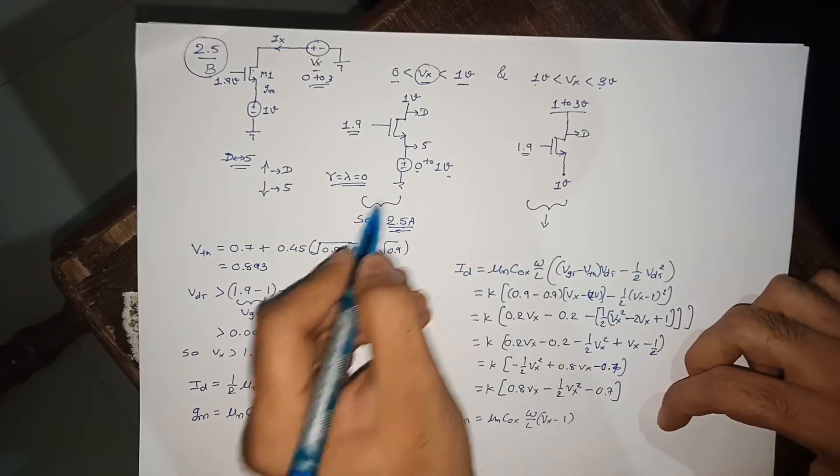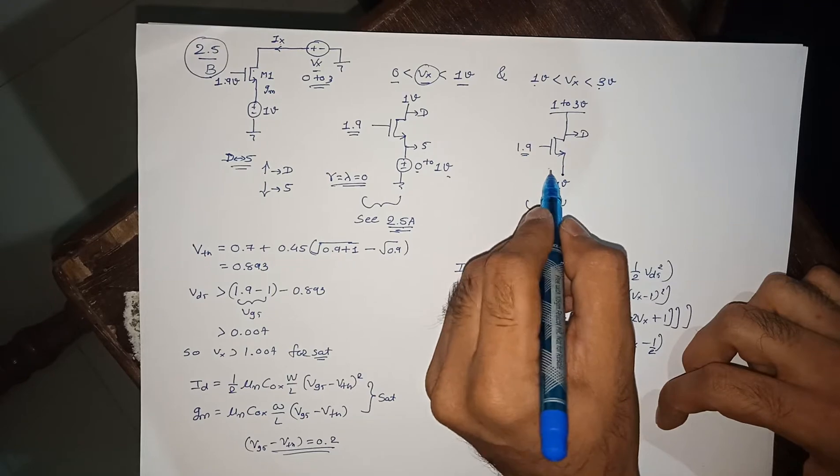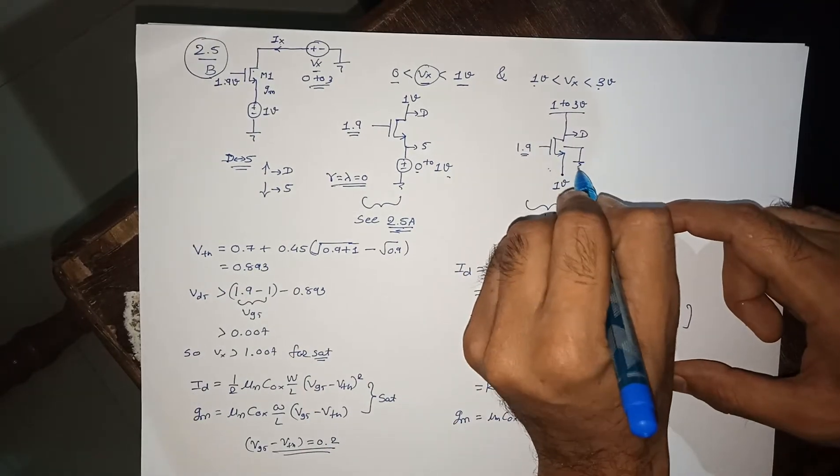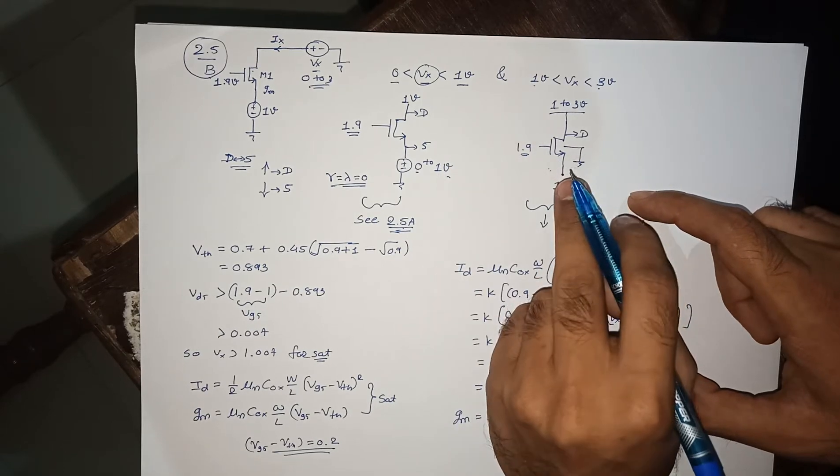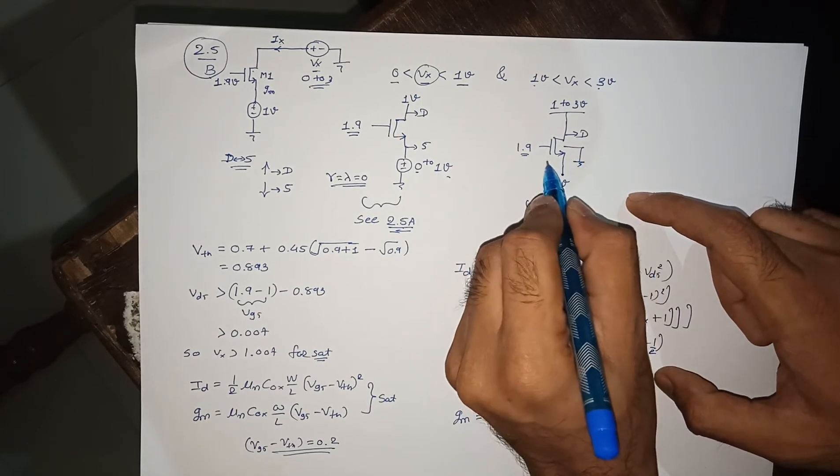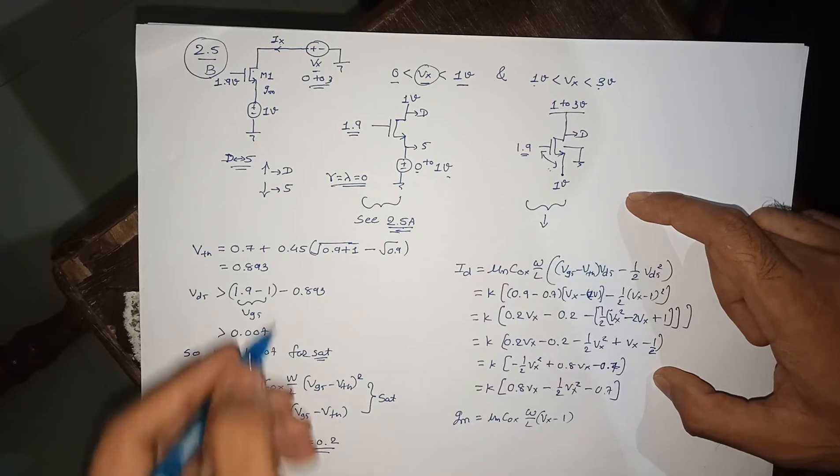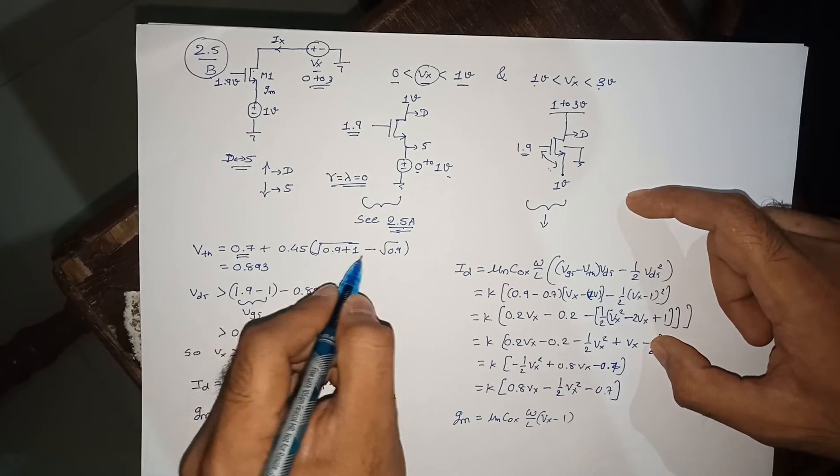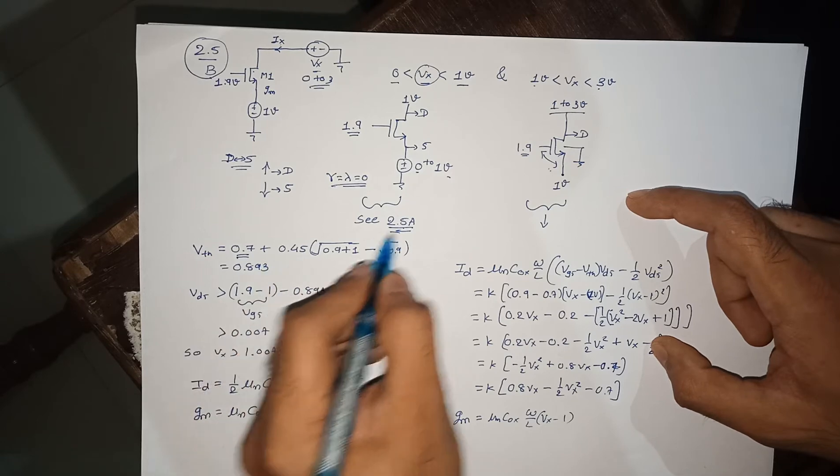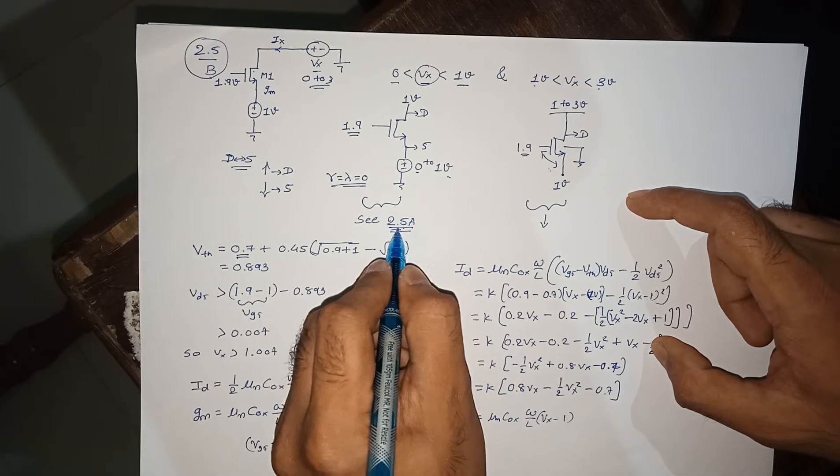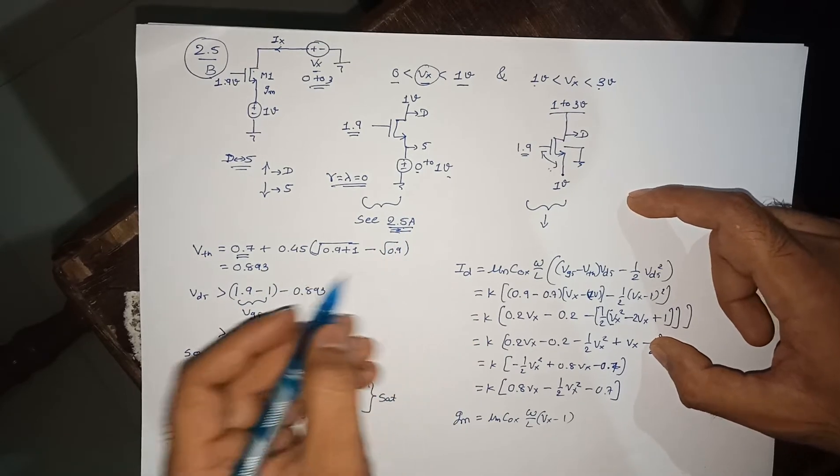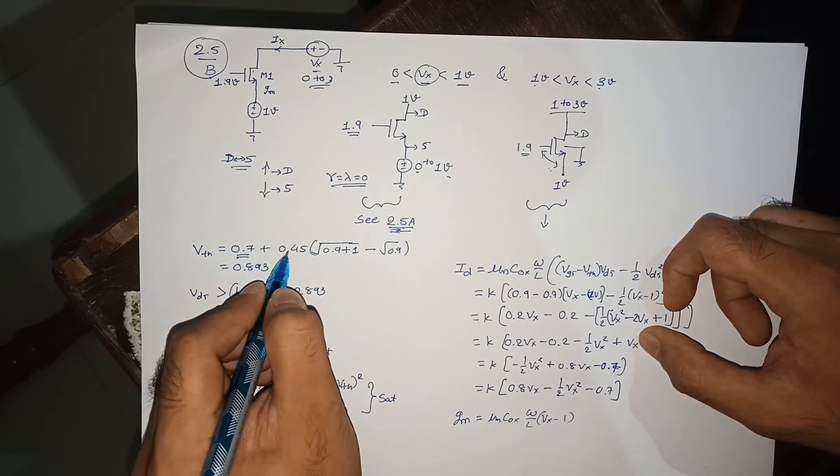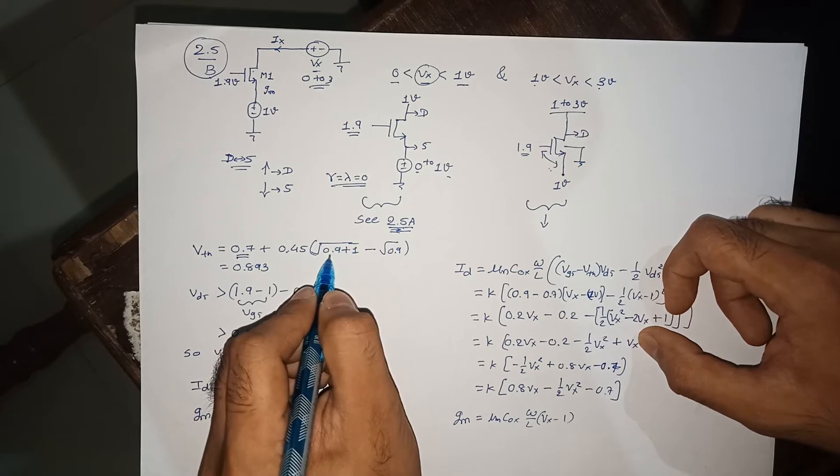I will show you both without body effect and with body effect. With body effect, your Vth is going to change, and that is 0.7. To get this value equation, you can refer to video 2.5 part A. Basically, this is the equation of new Vth: Vth0 plus gamma times square root of 2φf plus Vsb minus square root of 2φf.